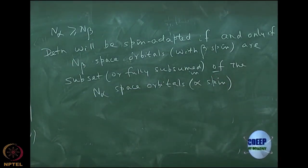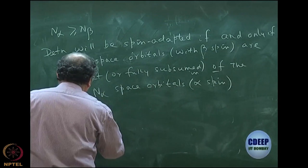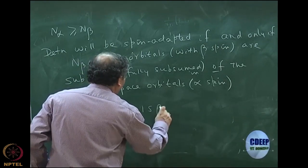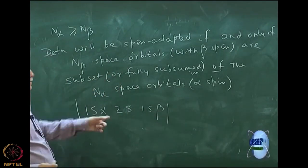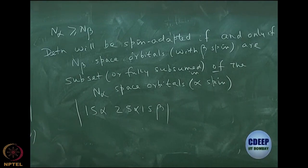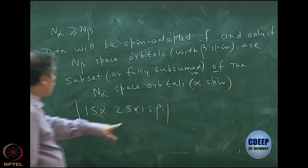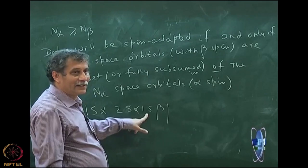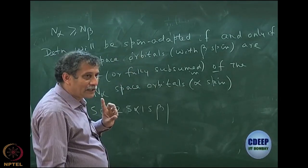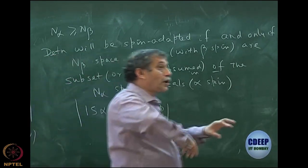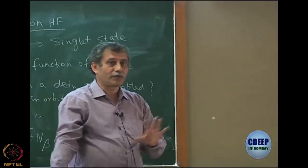For example: a determinant with 1s alpha, 2s alpha, 1s beta - does this satisfy the condition? Yes, because the space orbital for the beta part is 1s, which is completely contained in the alpha list of 1s and 2s. So this ticks the box - 1s is a subset of {1s, 2s}.